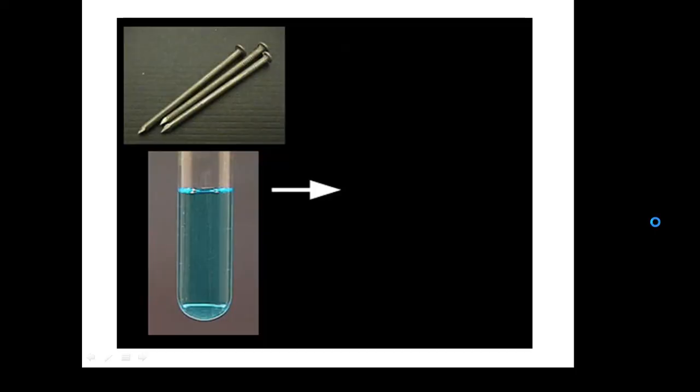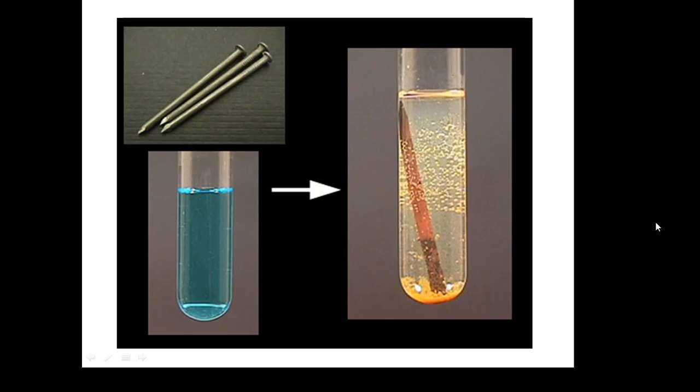Consider this: if you put an iron nail in copper sulphate, what happens? Hopefully this will be demonstrated to you. The nail appears to turn orange and the copper sulphate isn't blue anymore - it goes a kind of pale orange colour. So a chemical reaction has happened.